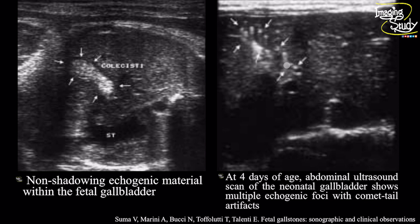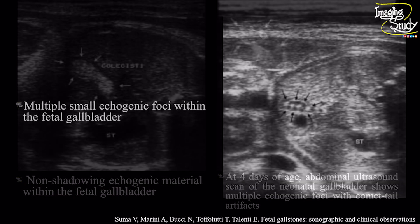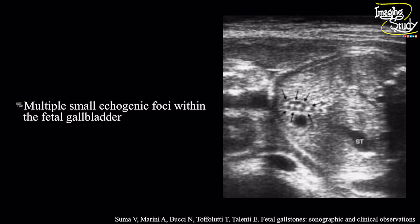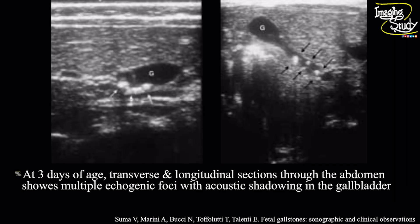These are tiny gallbladder calculi which may get resolved soon. In another case, you can see the hyper-echogenic foci noted at the fetal gallbladder. No posterior acoustic shadow is noted and these are gallbladder calculi. This patient got a follow-up scan at the postnatal period, and at three days of age the transverse and longitudinal section of the gallbladder by trans-abdominal ultrasound shows multiple echogenic foci casting faint posterior acoustic shadows, indicating cholelithiasis.